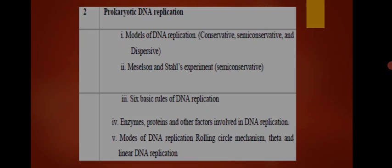In prokaryotic DNA replication we will first discuss the models of DNA replication. There are three models: the conservative mode of replication, the semi-conservative mode of replication, and the dispersive mode of replication. After that we study the Meselson and Stahl experiment, which proves the semi-conservative mode of replication.